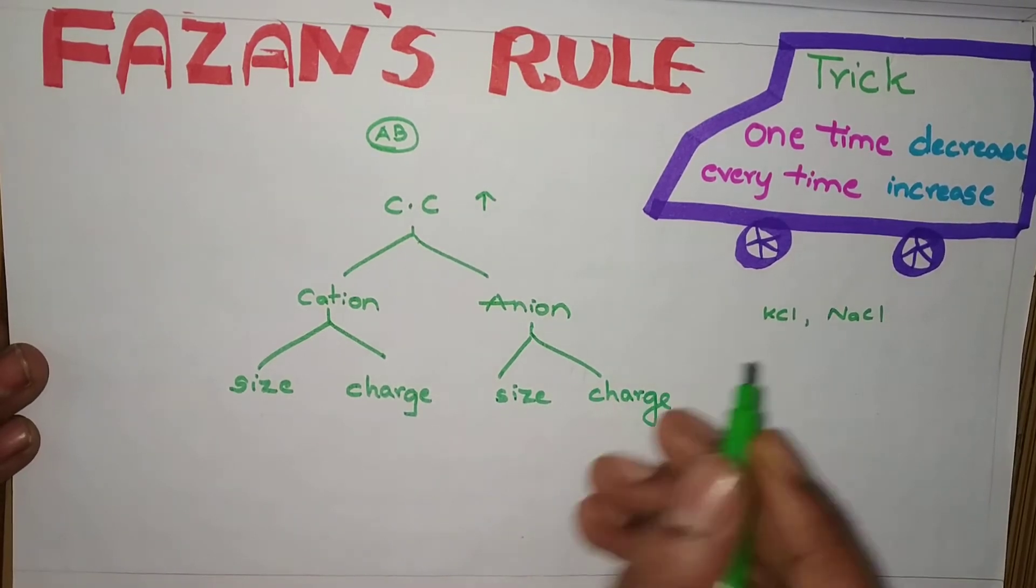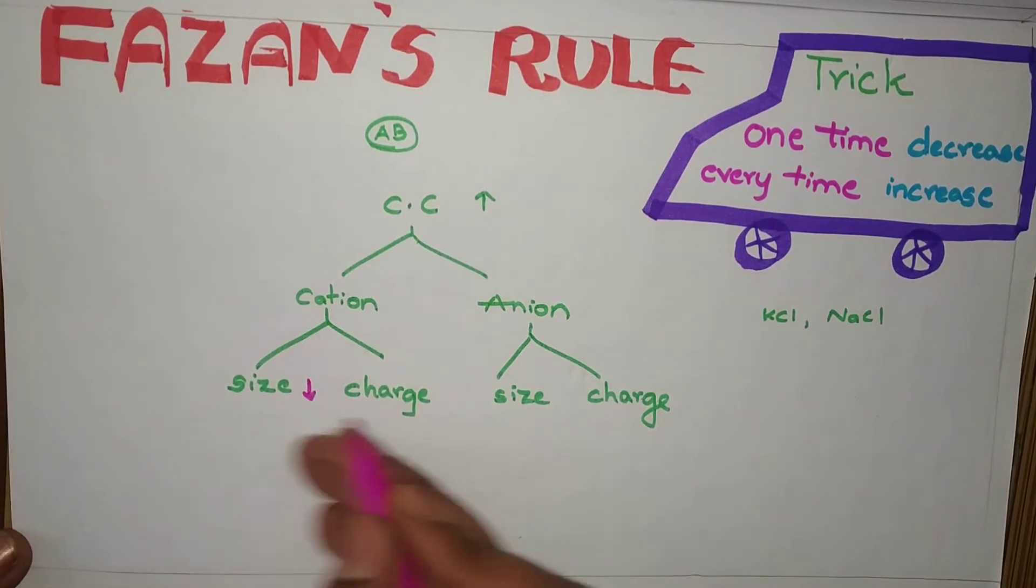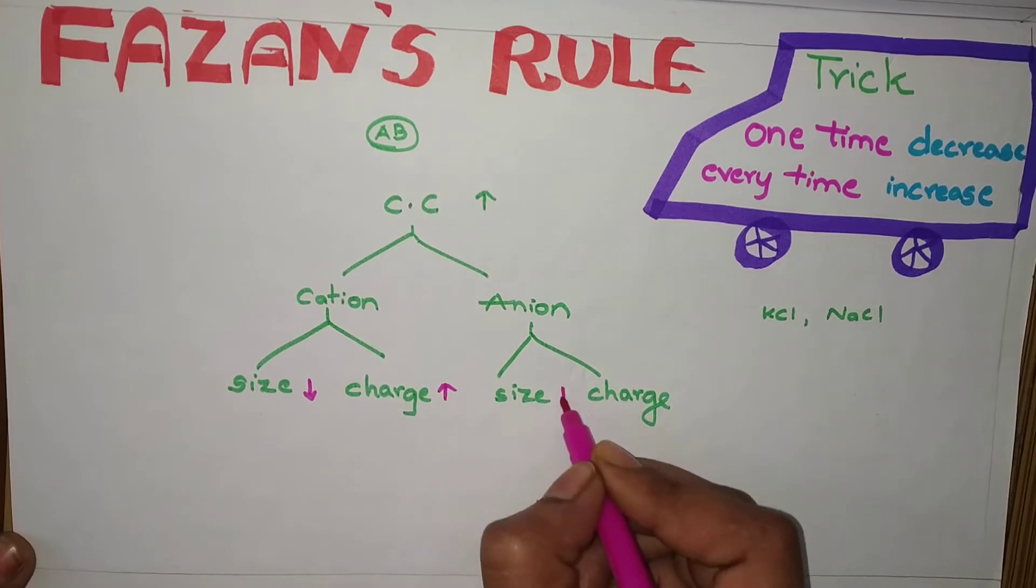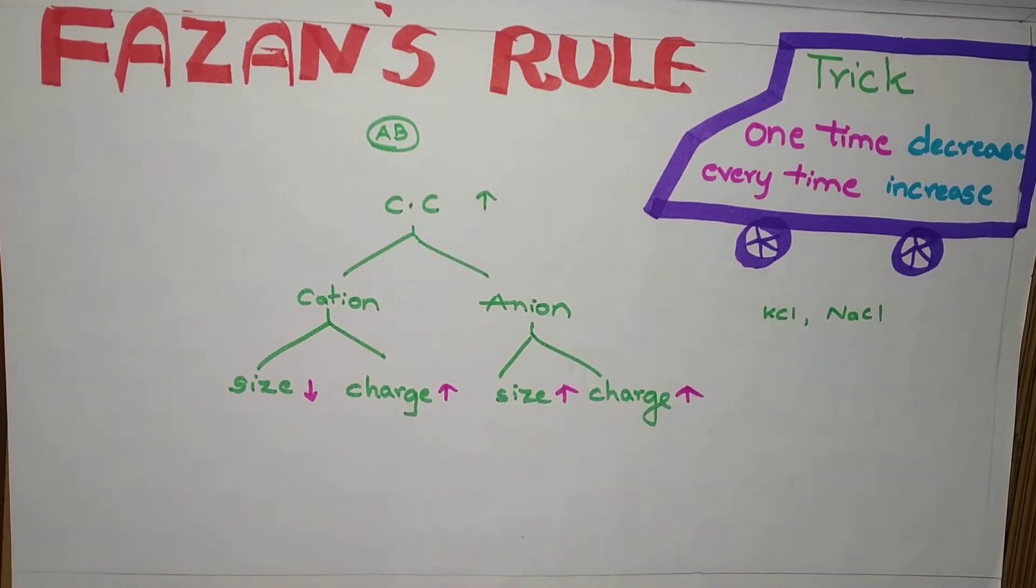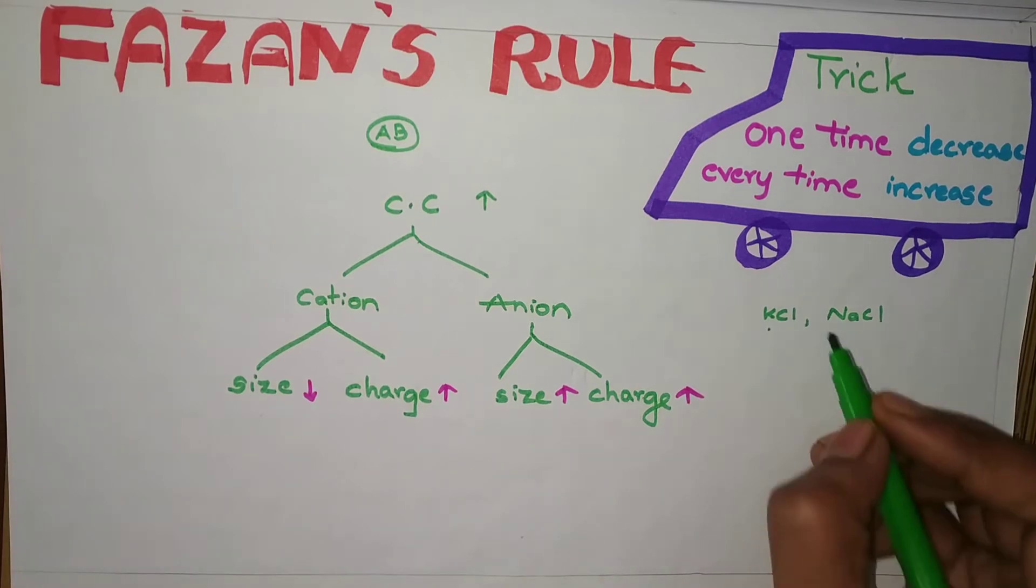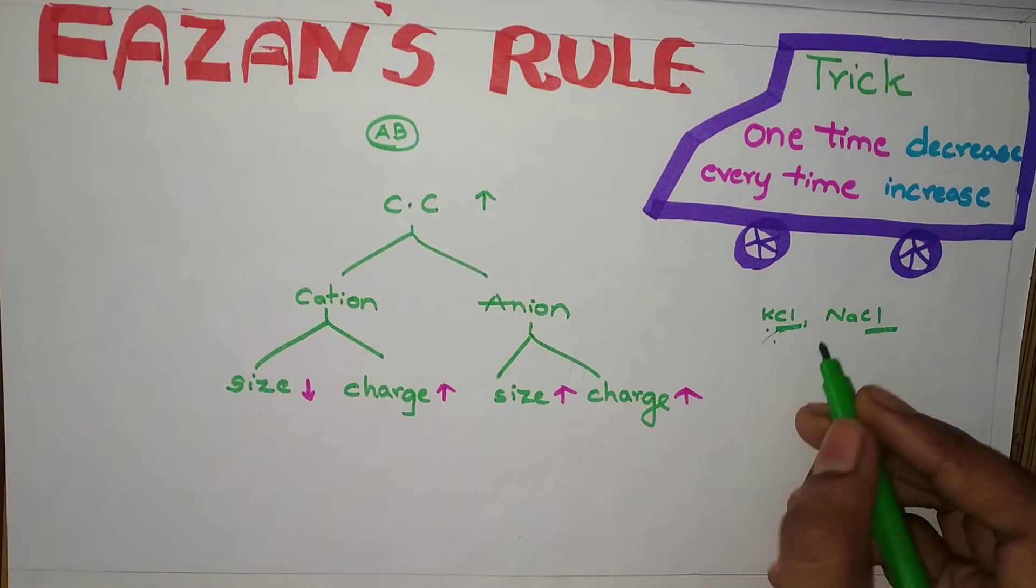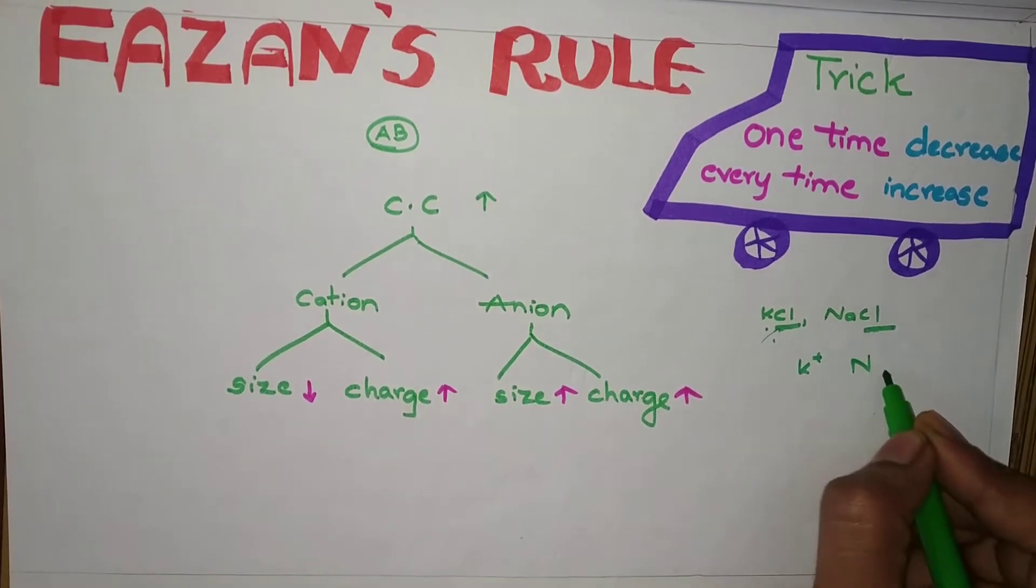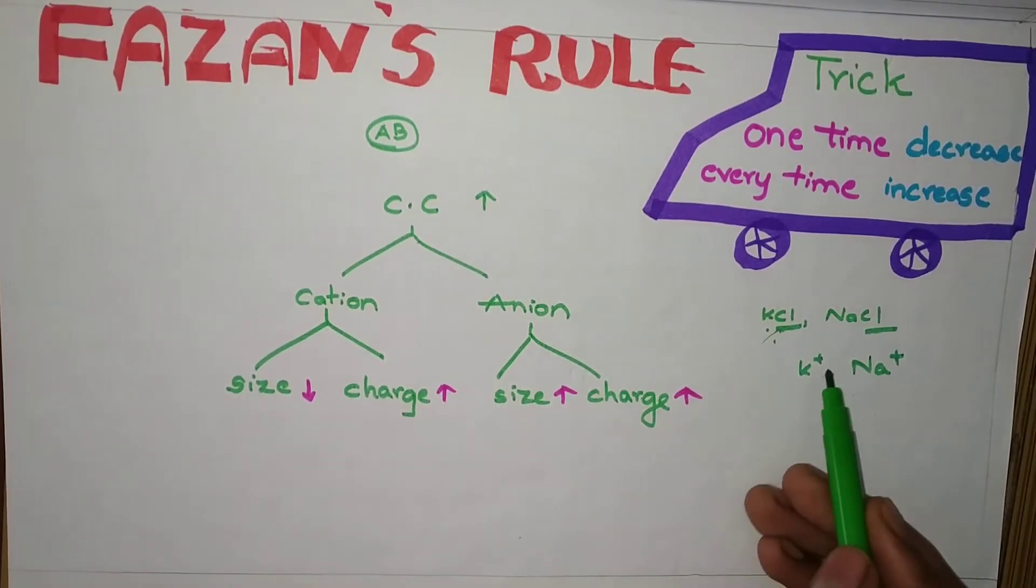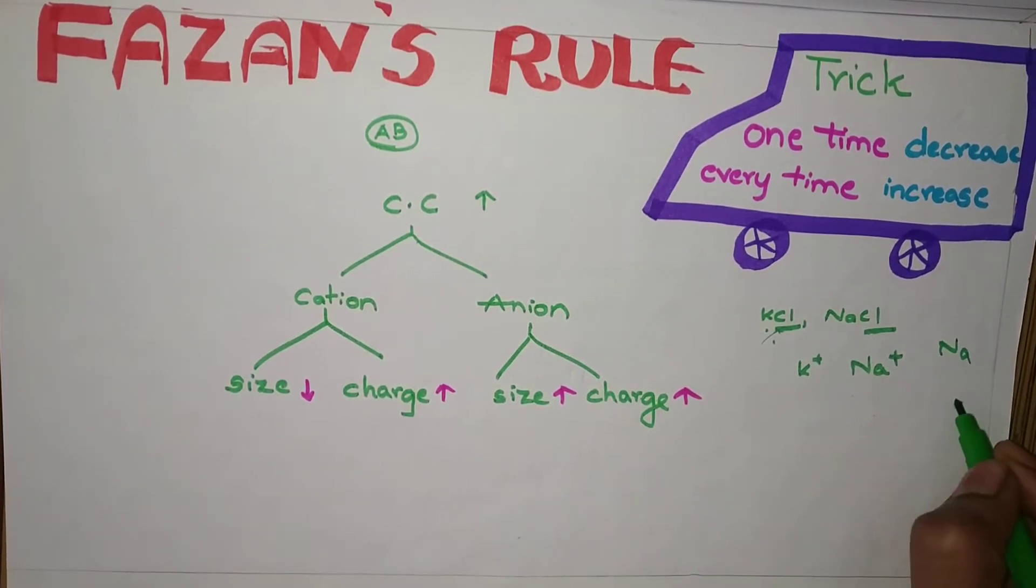What is this one time decrease, every time increase? See carefully, one time size decrease, every time increase. In this example, KCl, NaCl, anion is same. So look at cations, that is K+, Na+. In this, both charge is same. So according to size, sodium, potassium. From top to bottom, size increases.